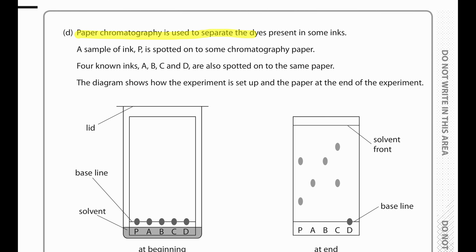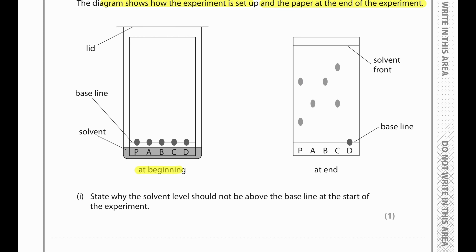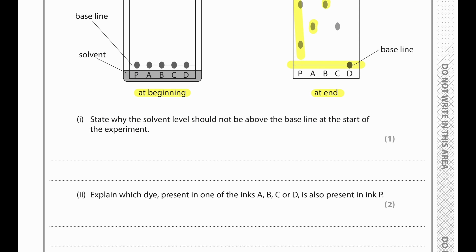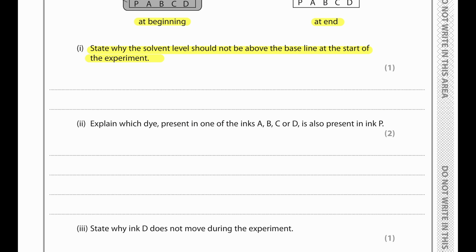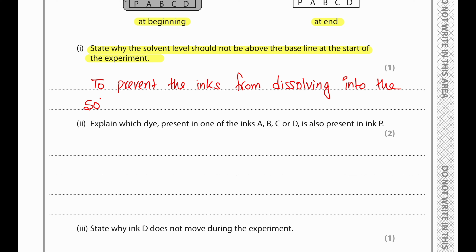Paper chromatography is used to separate dyes present in some inks. A sample of ink P is spotted onto chromatography paper. Four known inks A, B, C, D are also spotted on the same paper. The solvent level should not be above the baseline at the start of the experiment, to prevent the inks from dissolving into the solvent.